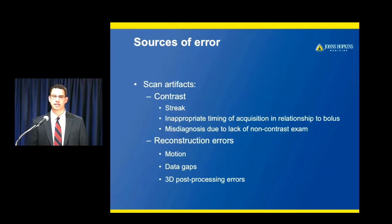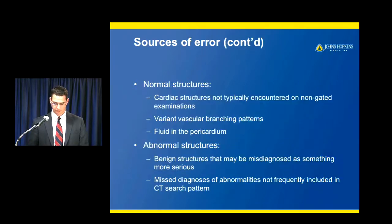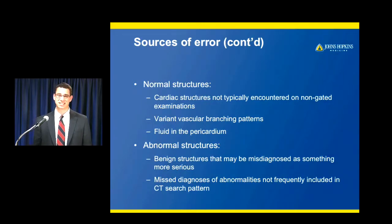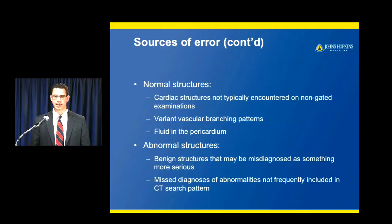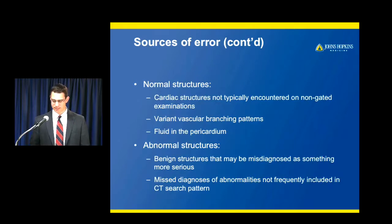This is an outline of what we're going to go over today: various types of error in cardiovascular CT. We'll review artifacts typically related to scanning itself — contrast artifacts — as well as reconstruction errors related to post-processing or motion during acquisition. Then we'll go over normal and abnormal structures not typically encountered on non-gated exams, variants in vascular branching patterns, pericardial issues, and benign cardiovascular structures that may be misdiagnosed as something more serious.